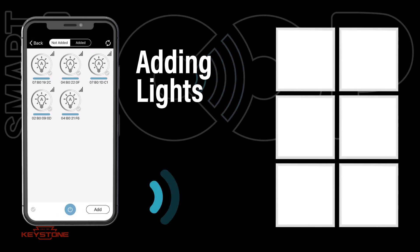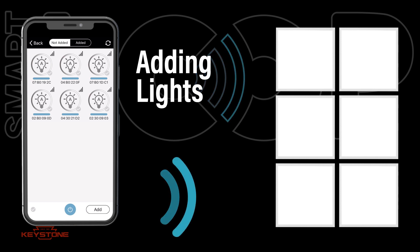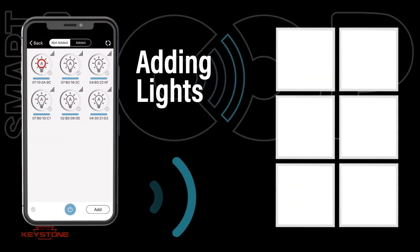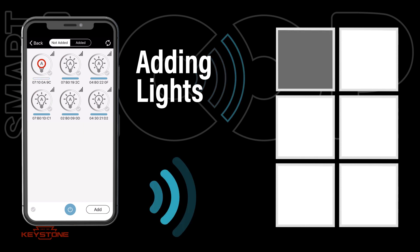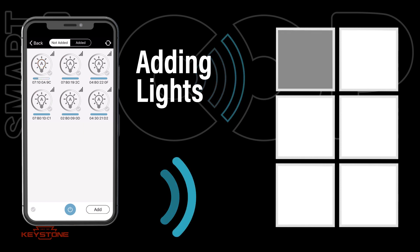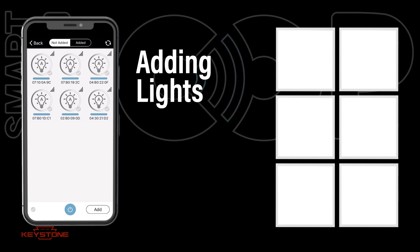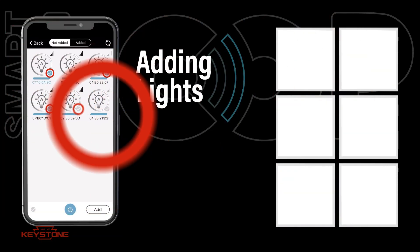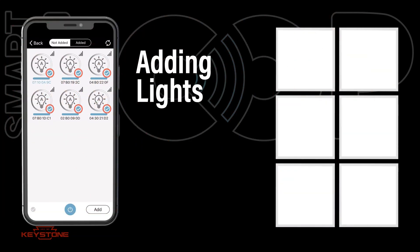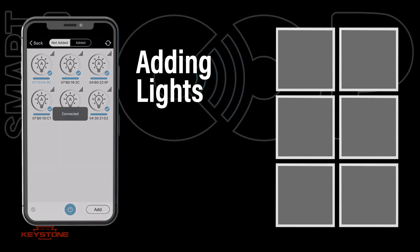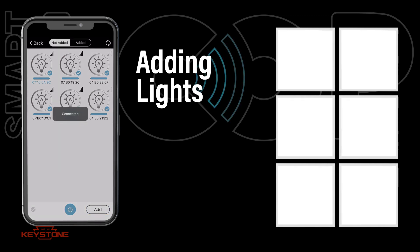You can identify lights to be commissioned to a region by turning them on and off. Press the A area of the light bulb icon and that light will turn off. Press the A area of the icon again to turn the light back on. Once confirmed, check the lights you want to add and press Add to confirm selections. All added lights will flash, confirming they have been added.